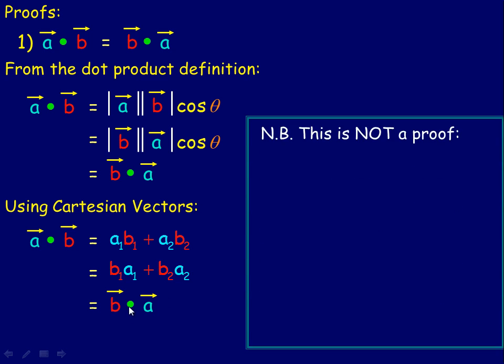Now just to show you, and this stands for nota bene, it's Latin, it does not stand for New Brunswick. Nota bene, which means take note, this is not a proof. All this is is an example. Let's say that you chose two specific vectors for a and b.